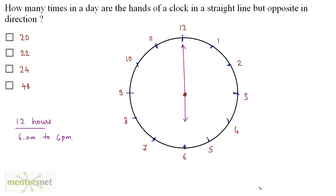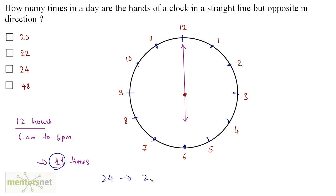12 hours have passed, and how many times did the two hands come in a straight line and opposite direction? It happened 12 times, but we need to count it as 11. Why? Because the position at 6 a.m. and 6 p.m. was the same — we counted the same position twice. So we subtract one. For 12 hours this happens 11 times. One day has 24 hours, so in 24 hours it happens 11 times 2, that is 22 times. So option B is the correct answer.